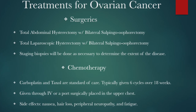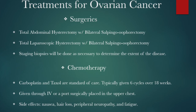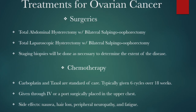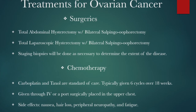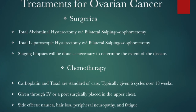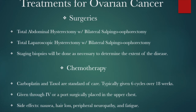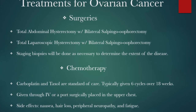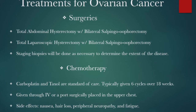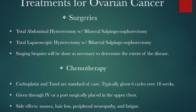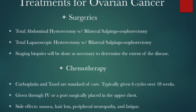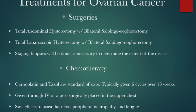Some patients may only require surgery and then close follow-up surveillance with their GYN oncologist. Cancers that have metastasized and are more aggressive will also require several rounds of chemotherapy following surgery. Typically, carboplatin and taxol are given as the first line of treatment, and there are other types of chemotherapy used if there is a recurrence. These drugs are administered through an IV or a port that is surgically implanted in the right upper chest. Side effects are typically nausea, hair loss, peripheral neuropathy, and fatigue. In some cases, patients will be followed by a number of oncology specialists, depending on the type and severity of their disease.